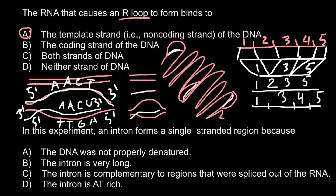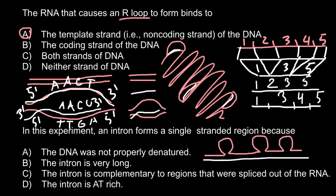Next question: in this experiment, an intron forms a single-stranded region because — and here are the four answers to choose from. When we hybridize messenger RNA with the complementary template strand of the DNA, the template strand of the DNA would be much longer because it includes introns. Introns wouldn't be able to bind to the messenger RNA because in the mature messenger RNA those fragments have been spliced off. These loops we call introns on the DNA strand, and the fragments that bind to the messenger RNA we call exons.